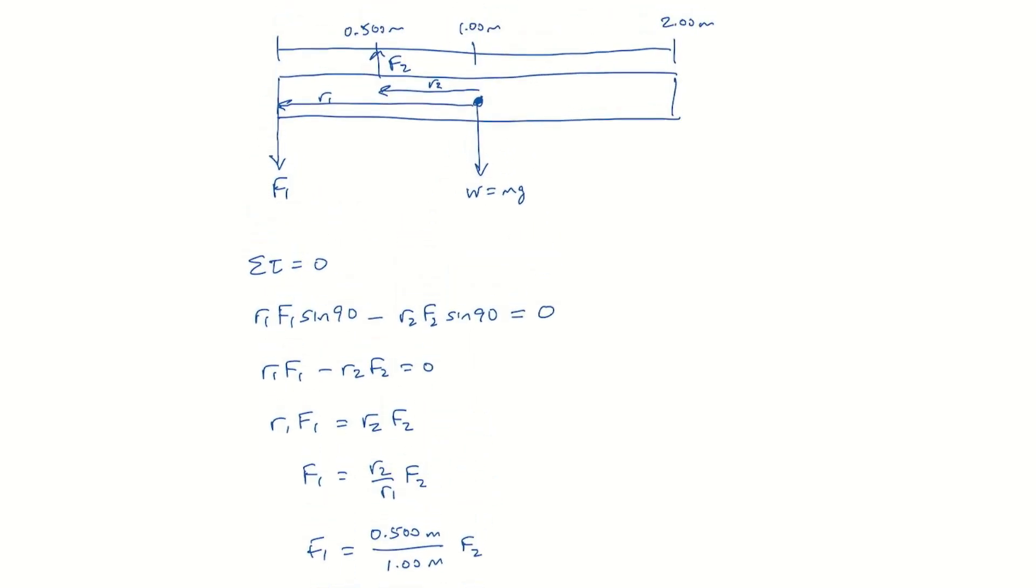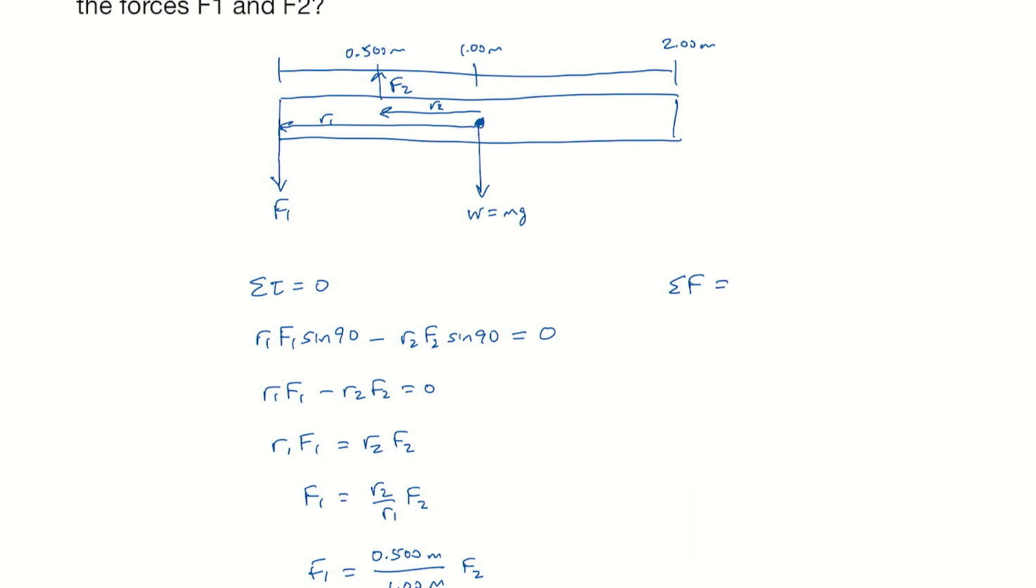We can sum the forces. They are also equal to 0. And so here what we have is an upward F2 minus downward F1 minus downward weight. Those are all the forces we have. They add up to 0.